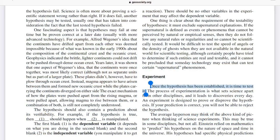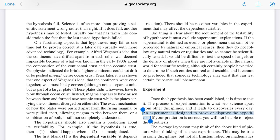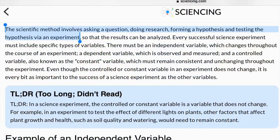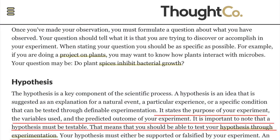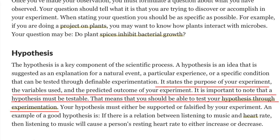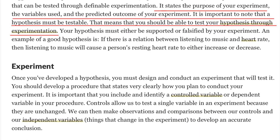Your hypothesis doesn't have to directly relate to what your experiment is. The scientific method begs to differ — from GeoSociety.org: once the hypothesis has been established, it is time to test it; an experiment is designed to prove or disprove the hypothesis. No, no — you're not directly testing the hypothesis. From Sciencing.com: the scientific method involves forming a hypothesis and testing the hypothesis via experiment. From ThoughtCo: a hypothesis must be testable — you should be able to test your hypothesis through experimentation, and once you've developed a hypothesis, you must design and conduct an experiment that will test it.